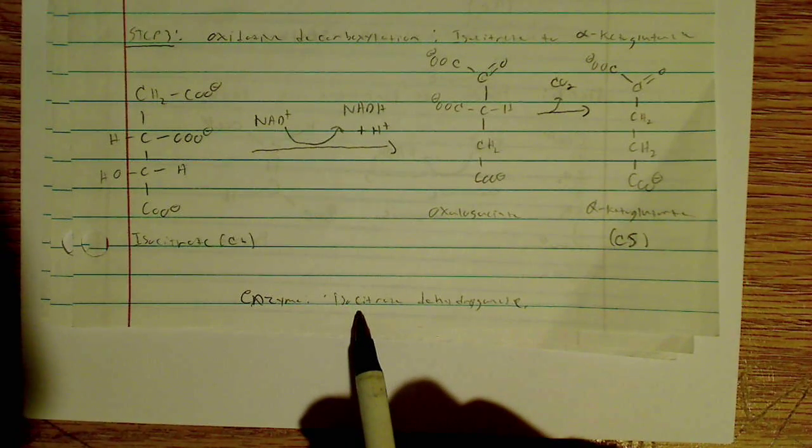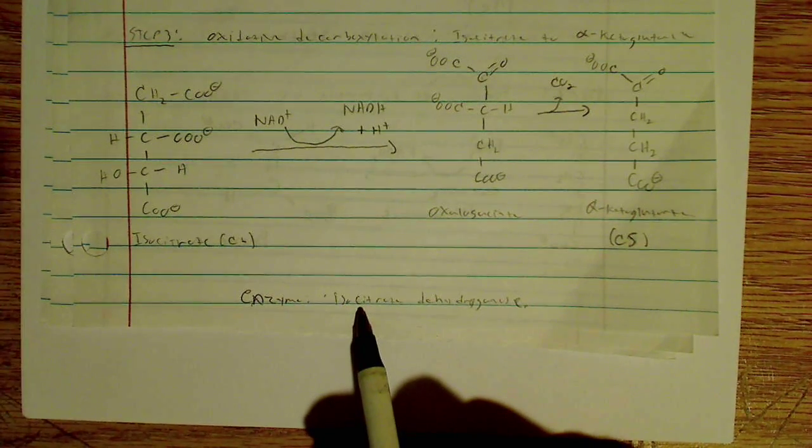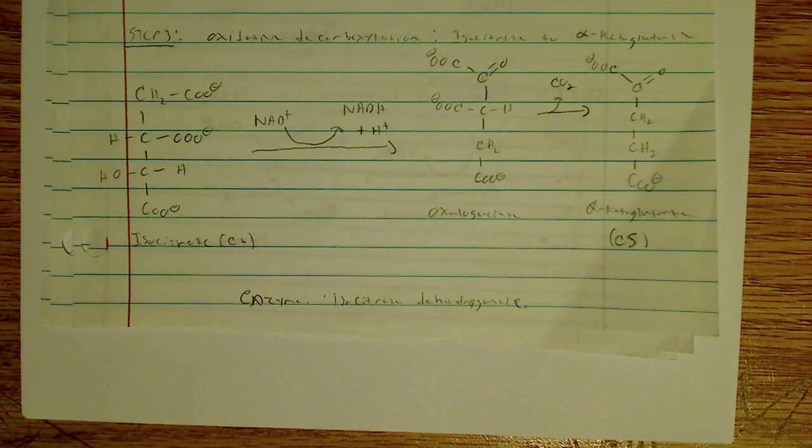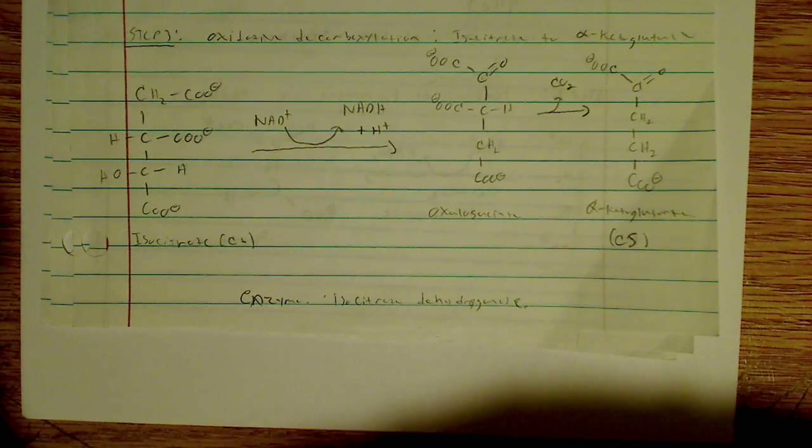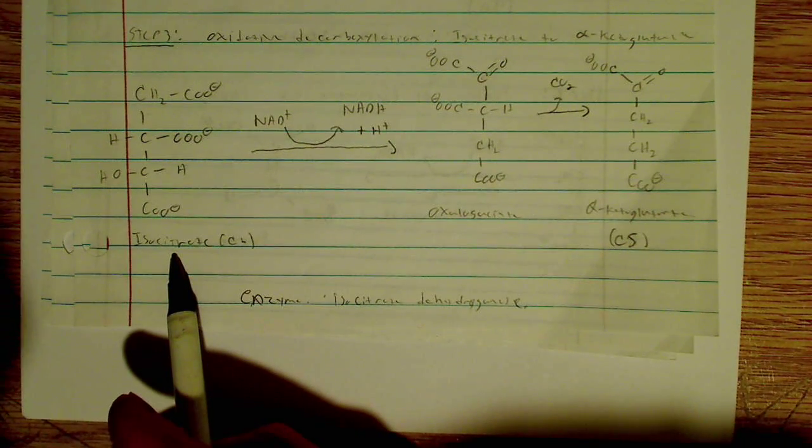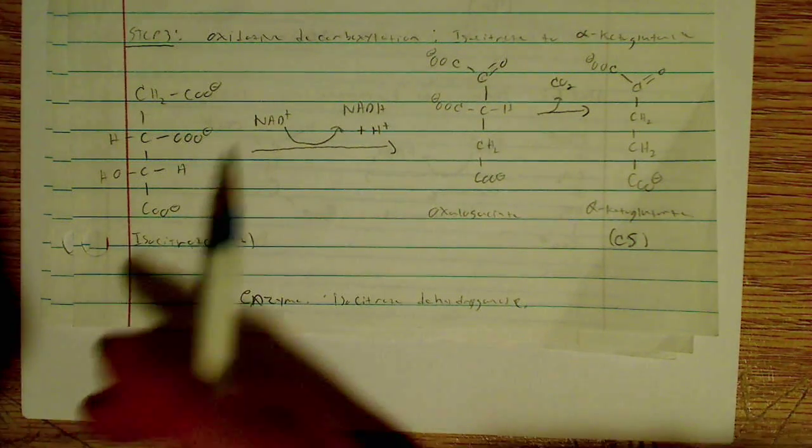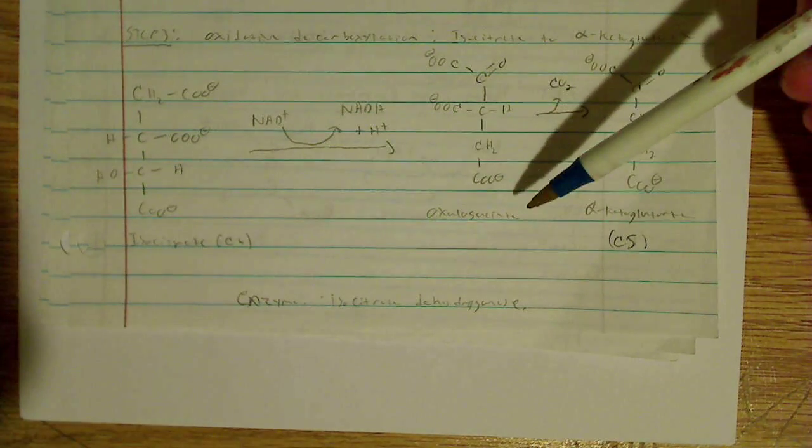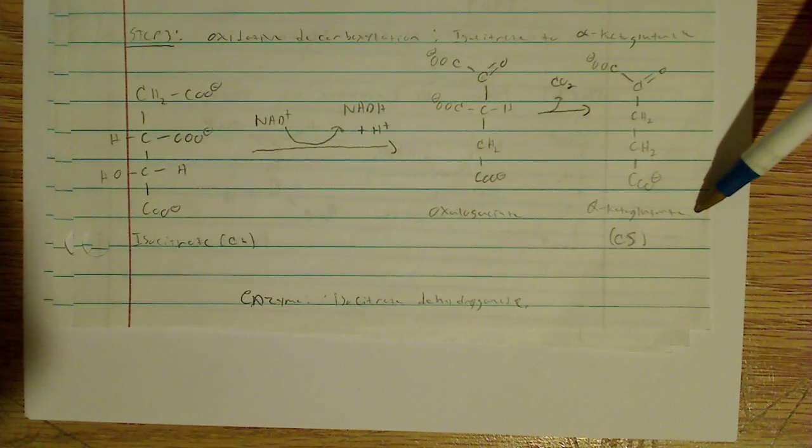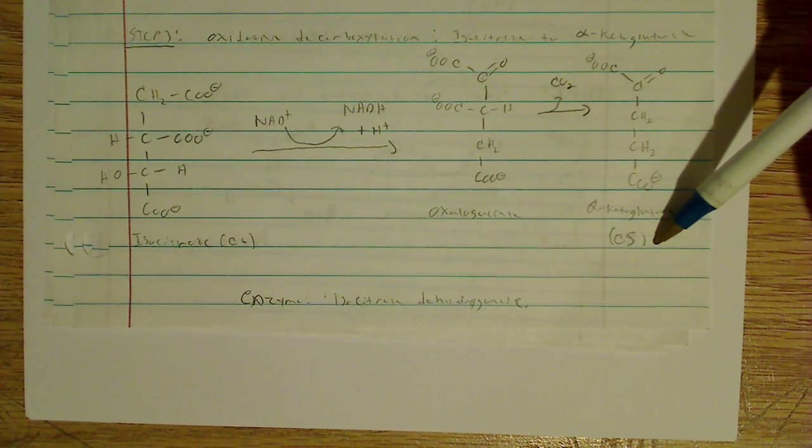And the enzyme I wrote down here this time is isocitrate dehydrogenase. I always make sure just to label what the enzyme is just so I know because they often become important in regulation. So isocitrate again here, six-carbon molecule. Here's my NAD+ being reduced to NADH, releasing H+ as well. And I'm forming ultimately alpha-ketoglutarate, and I'm losing one carbon to make a five-carbon molecule.